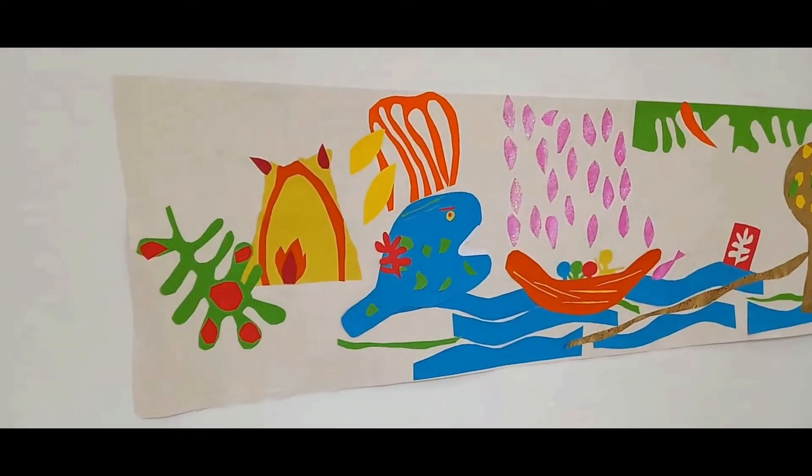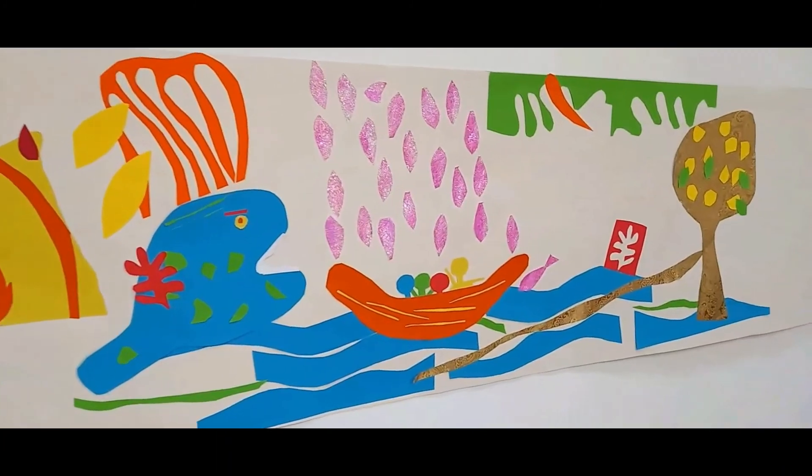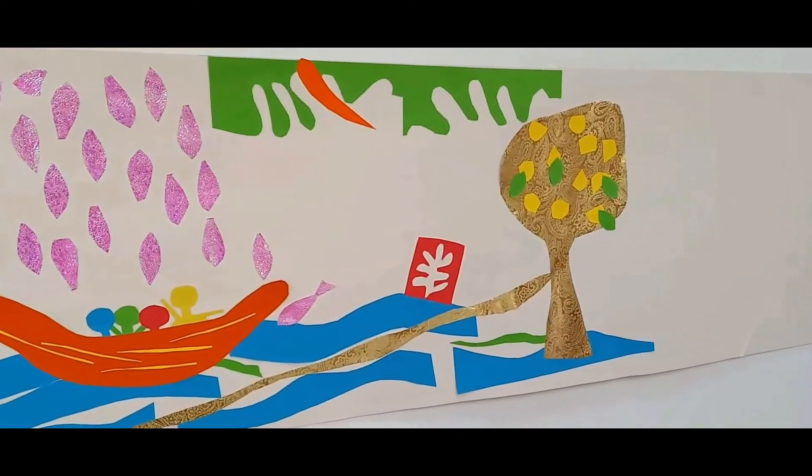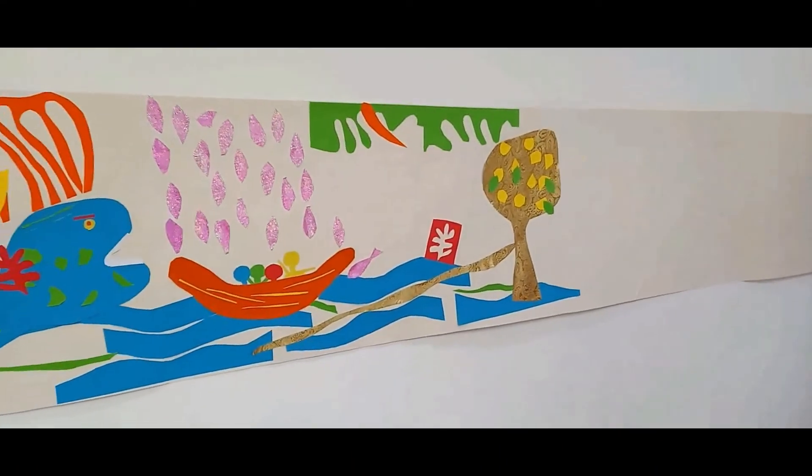It's really nice as well to use a lot of Matisse's organic shapes. Use the brightest paper you can find and it's a great idea to gather rolls of wrapping paper any time you see them going cheap for your collage projects.